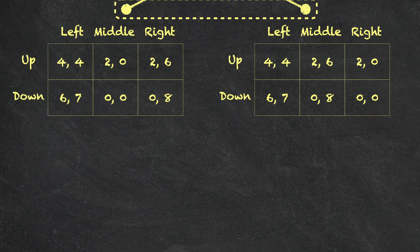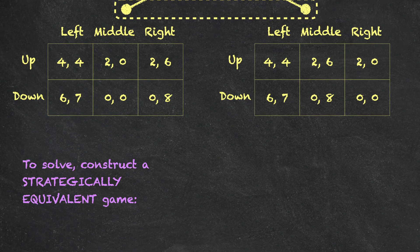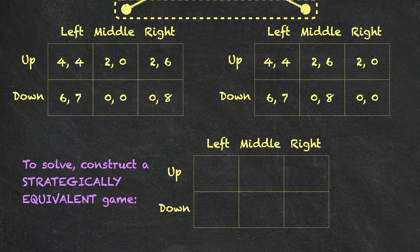So how do we solve a game like this? We're going to construct a strategically equivalent game and then use the concept of Nash equilibrium, whereby each player is choosing a best response on the belief that the other player is also using a best response. By a strategically equivalent game, I mean that for any pair of actions chosen by these players, the expected payoffs are exactly the same as the expected payoffs in the game of incomplete information above.